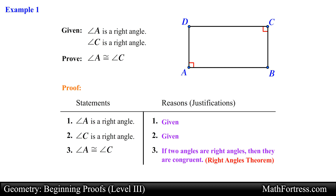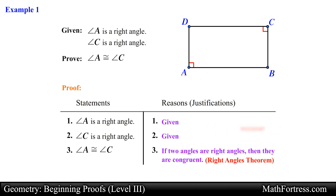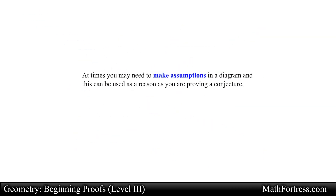We can essentially say 'right angles theorem' as a reason, but you should not use this shortcut until you have practiced various proofs, since taking shortcuts will make it harder for you to learn the concepts of geometry. And this ends the proof. At times you may need to make assumptions in a diagram, and this can be used as a reason as you are proving a conjecture.